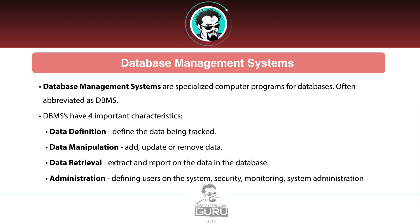Unlike the spreadsheet, there is a fourth important characteristic: administration. The database management system allows you to administer the system — defining users, setting up security so certain users can do some things but not others, and monitoring system performance. System administration is a very large topic and can involve monitoring system health, determining where data is being stored, index operations to make data access faster, and adding constraints.